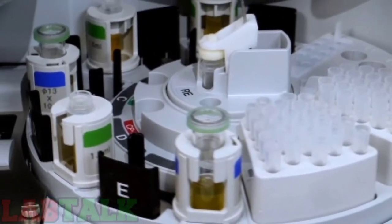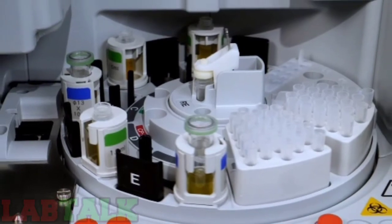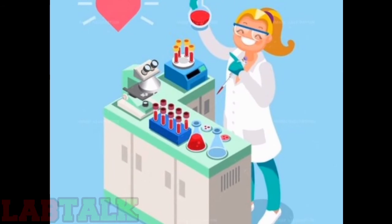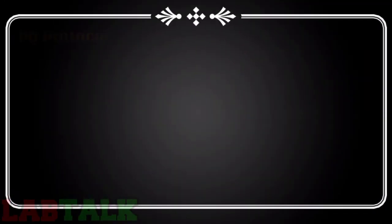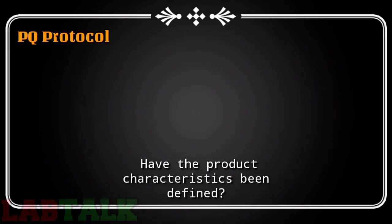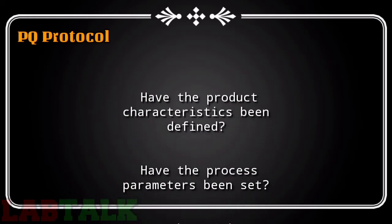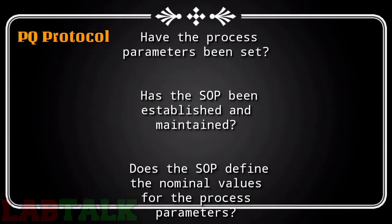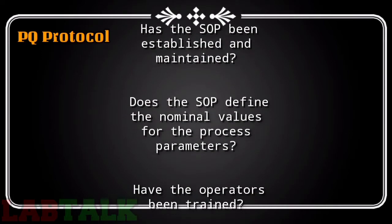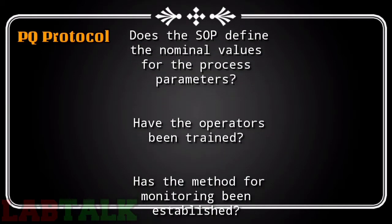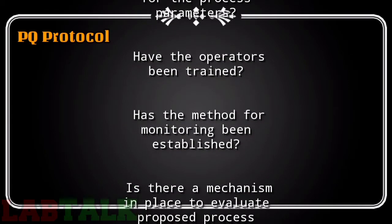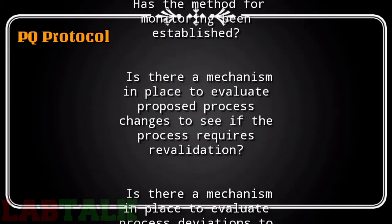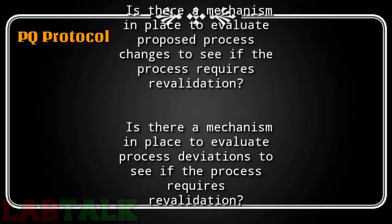Following checklist for the PQ portion of the process validations should be made available. This includes the following points: Have the product characteristics been defined? Have the process parameters been set? Has the SOP been established and maintained? Does the SOP define the nominal values for the process parameters? Have the operators been trained? Has the method for monitoring been established? Is there a mechanism in place to evaluate proposed process changes to see if the process requires revalidation? Is there a mechanism in place to evaluate process deviations to see if the process requires revalidation?